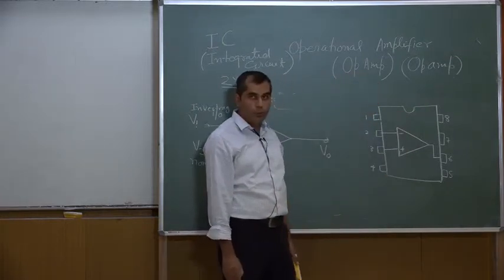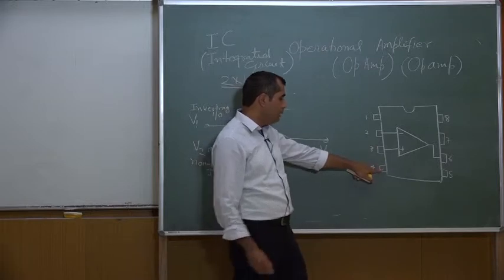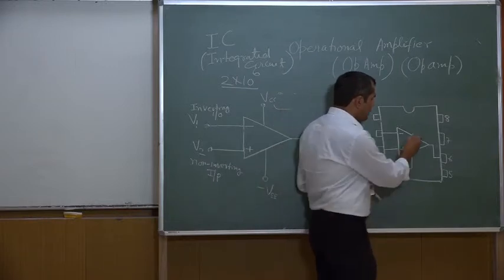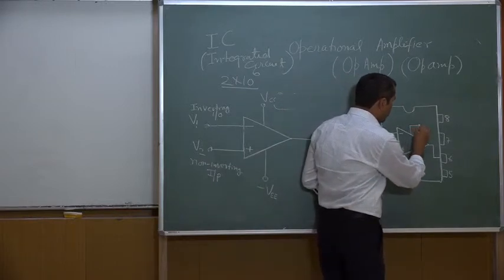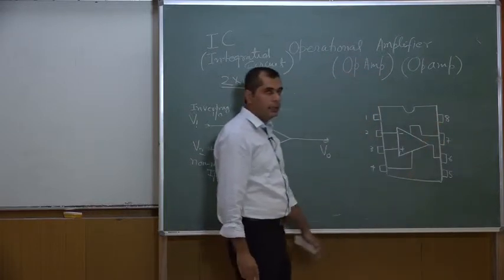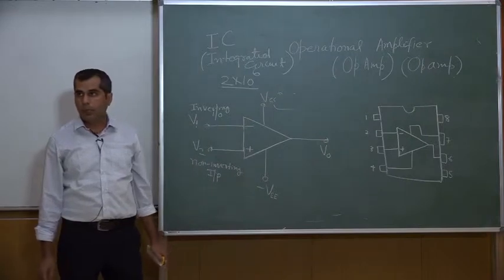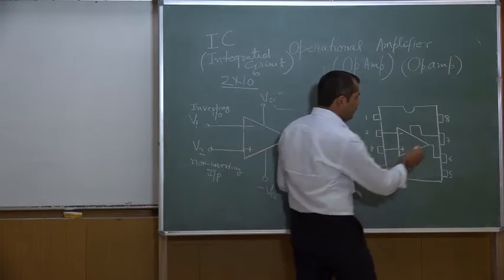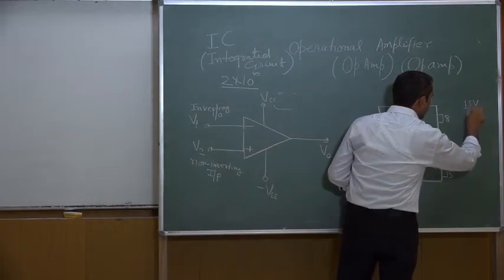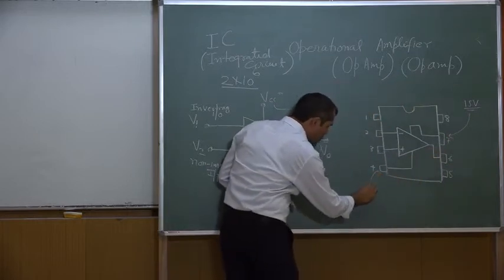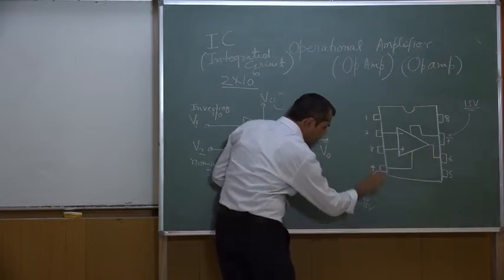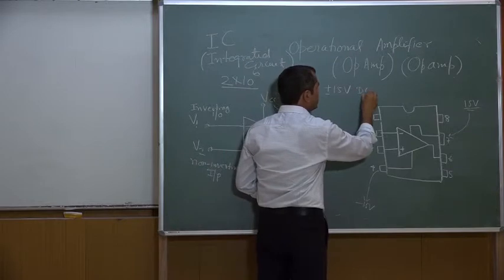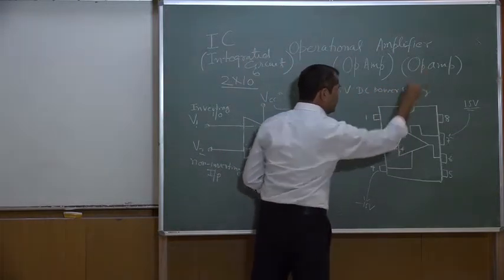There are two power supplies: the negative power supply is connected at pin number 4, and the positive power supply is connected at pin number 7. Generally for IC741, you can apply plus 15 volt DC at pin number 7 and minus 15 volt DC at pin number 4 — so a ±15 volt DC power supply is used.